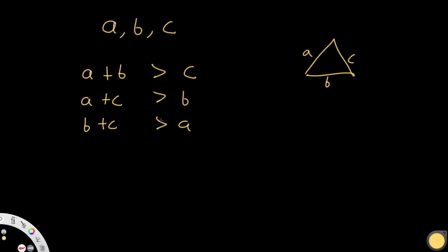You can look at the most extreme case, which is an equilateral triangle. If all sides are 5, then 5+5=10 which is always greater than 5. So this rule always applies true for any type of triangle, and this is what we'll use to find valid triangle values.